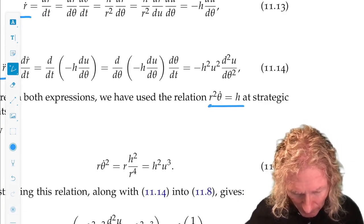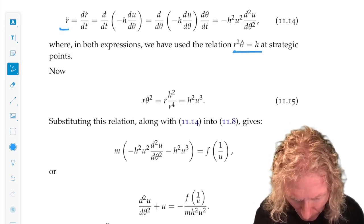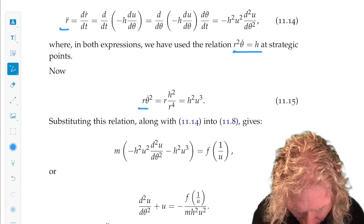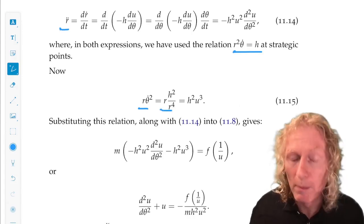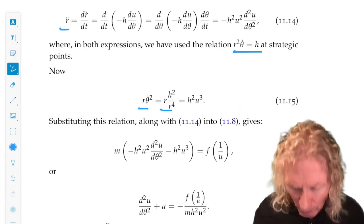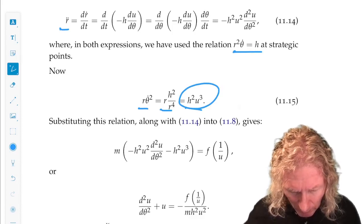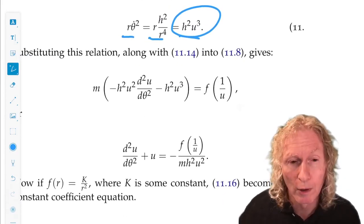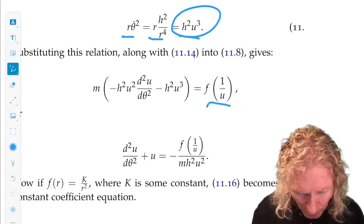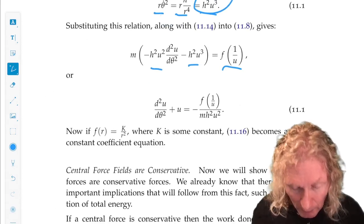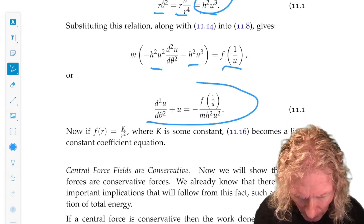We're going to use the fact that r theta dot squared is h squared over r to the fourth. One of the r's cancel, but r is 1 over u, so this reduces to this expression. Now, f of r is now f of 1 over u. So, using these expressions we've derived above, the equation for r double dot becomes this.